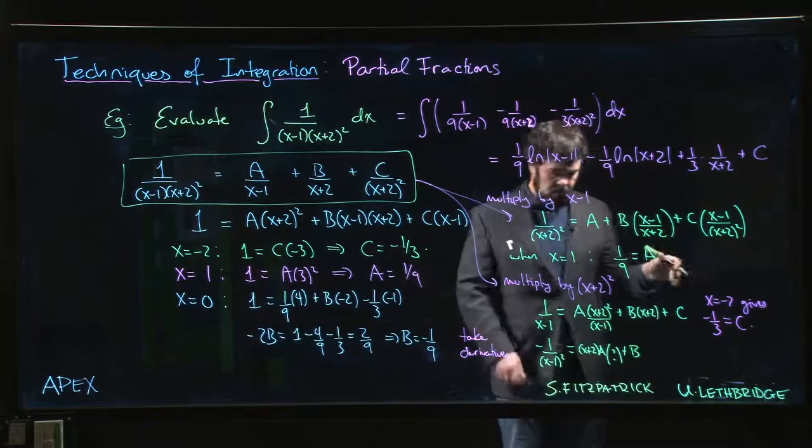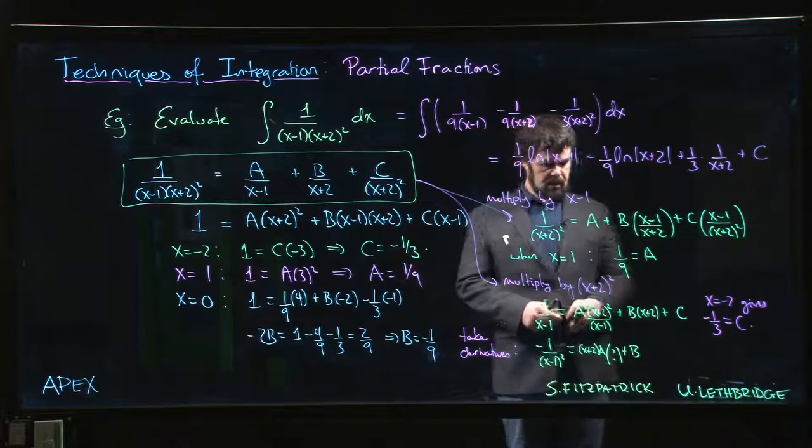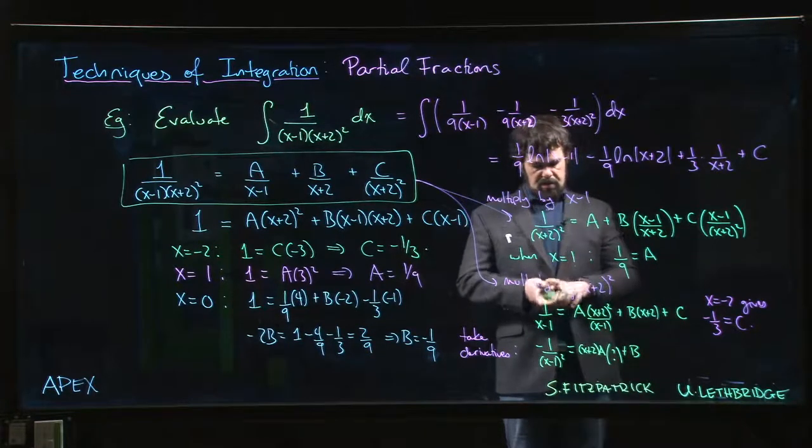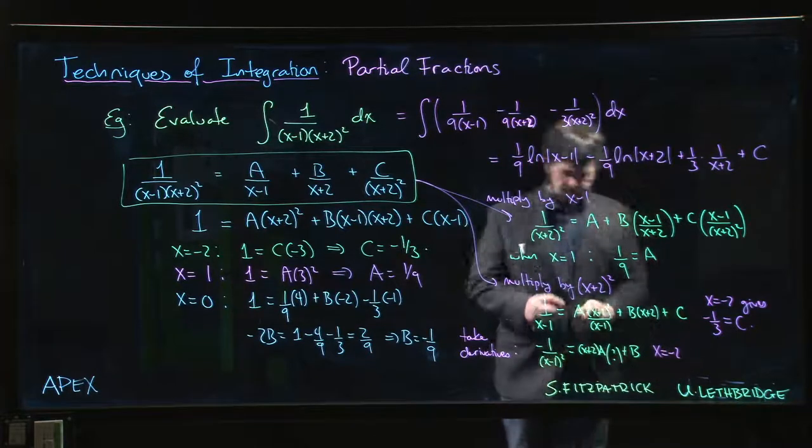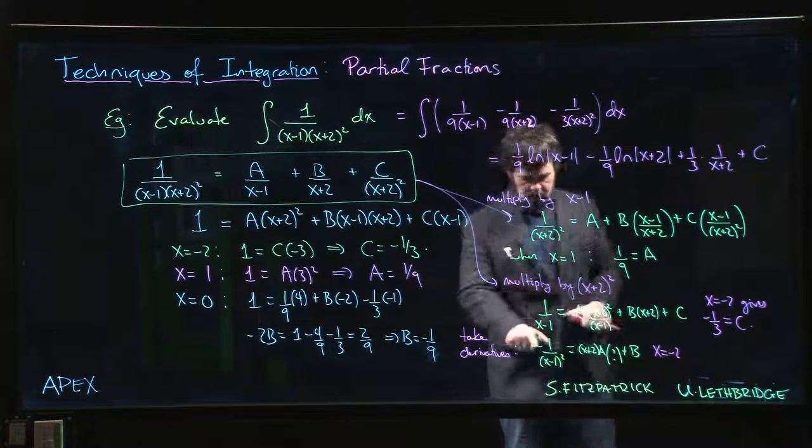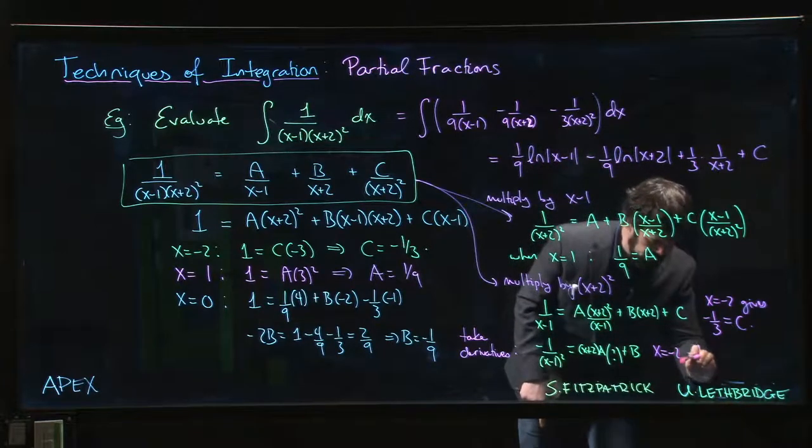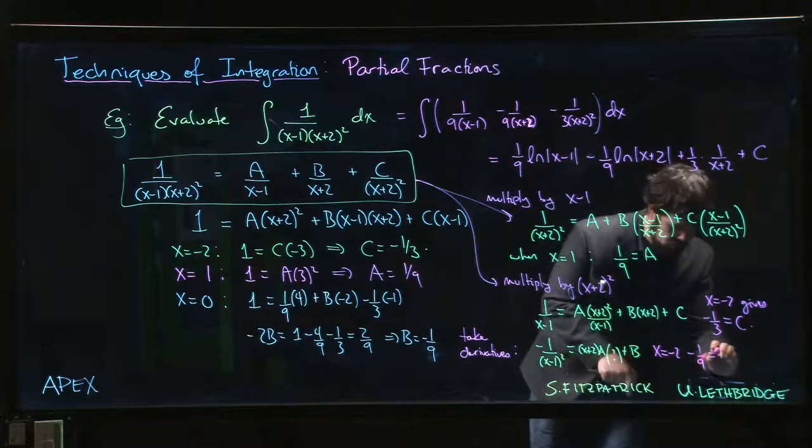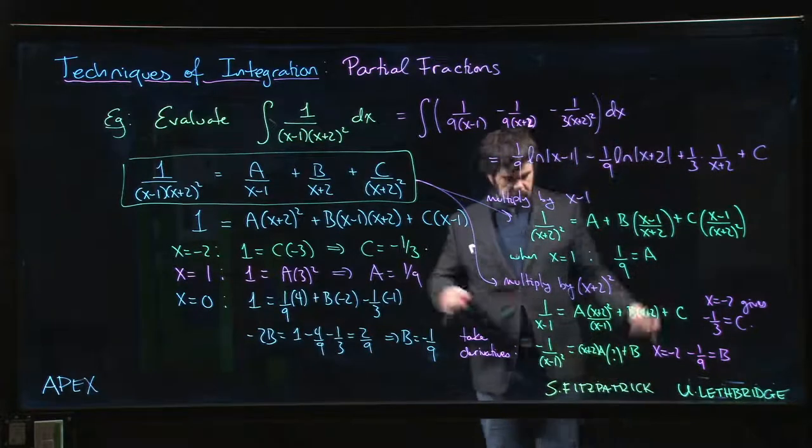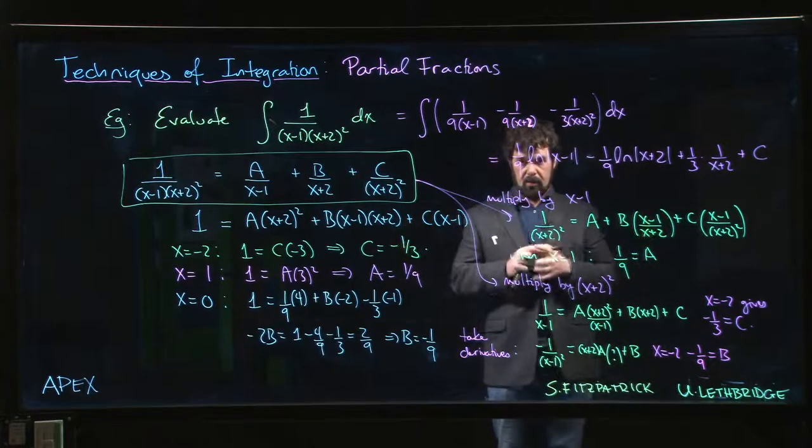I get minus 1/9 on this side. That's going to go to 0, and that's just b. And again, I get my coefficients.